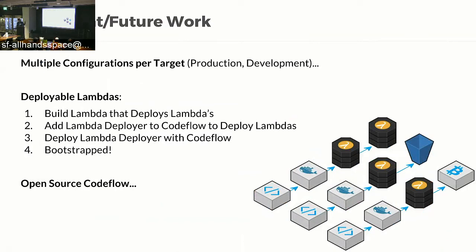Then we have deployable Lambdas. The last InfraCoder meetup had someone talk about deployable Lambdas, and then we went and made them. First we built a Lambda that deploys Lambdas. Then we added a Lambda deployer to CodeFlow to deploy Lambdas, and then deployed the Lambda deployer with CodeFlow — so it's bootstrapped. The Lambda deployer deploys itself, just like CodeFlow deploys itself. This includes nice security features: we encrypt all environment variables using KMS keys, we sign things, and we've taken the same security stance with Lambdas as with our EC2 instances.